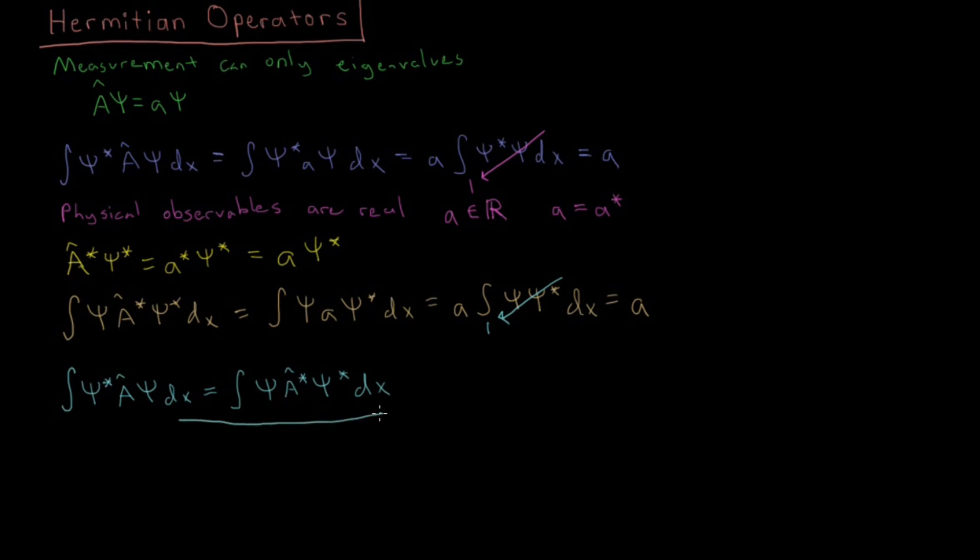So an operator is said to be Hermitian if this is true. If true, A is Hermitian. So that's a general definition for what constitutes a Hermitian operator. And this basically has to be the case in quantum mechanics, because we have this constraint that these eigenvalues are going to be measurable physical properties.